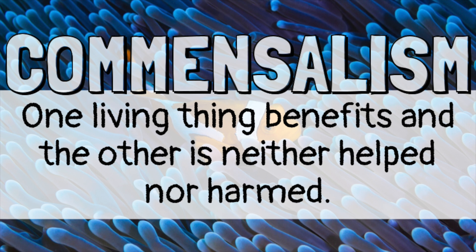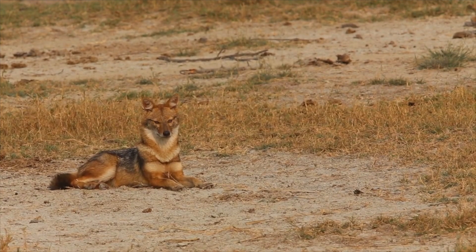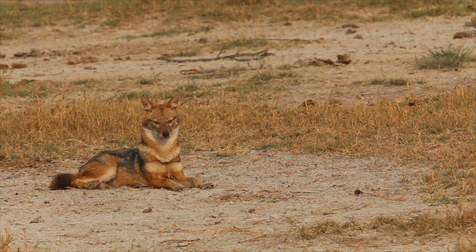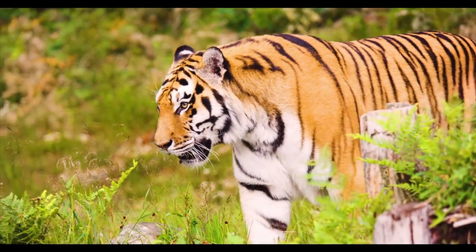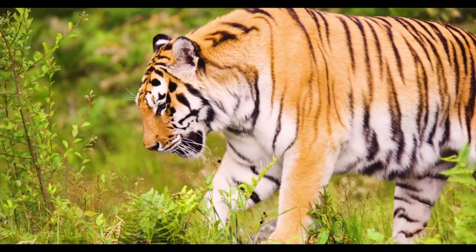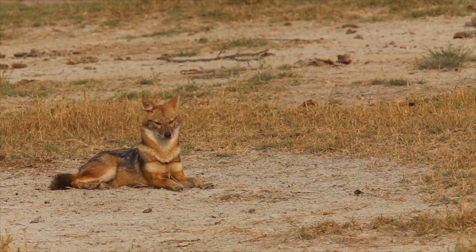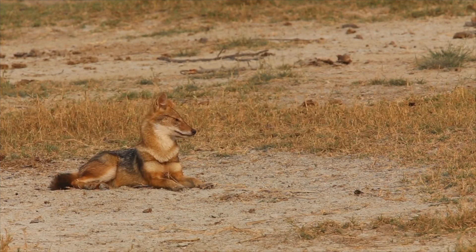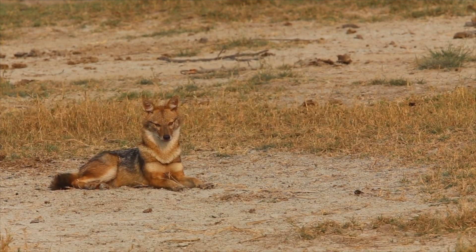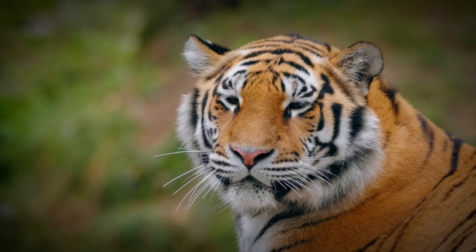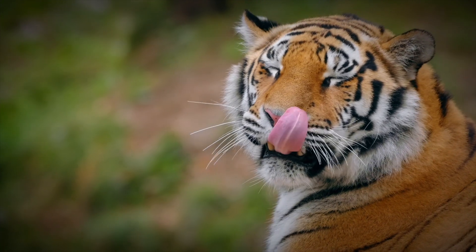Another type of symbiotic relationship is called commensalism. Commensalism happens when one living thing benefits from the relationship and the other is neither helped nor harmed. For example, wild dogs called golden jackals have been known to follow tigers around. After the tiger has killed its prey and eaten its fill, the jackal finishes off the leftovers. In this way, the golden jackal gets a free meal without having to hunt, while the tiger is not helped or harmed by the relationship.